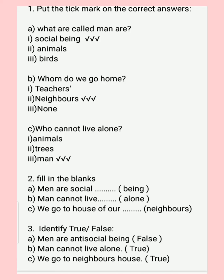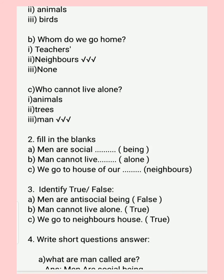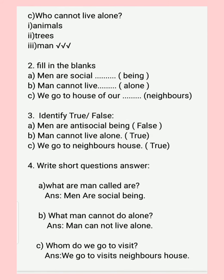Question B: Whose home do we go to? Options: home, teachers, neighbors, none. The correct answer is neighbors. Question C: Who cannot live alone? Options: animals, trees, men. The correct answer is men — men cannot live alone. So we have completed our first topic.